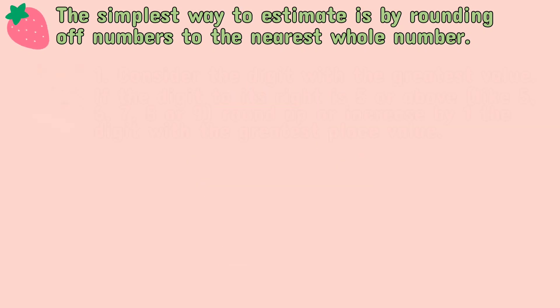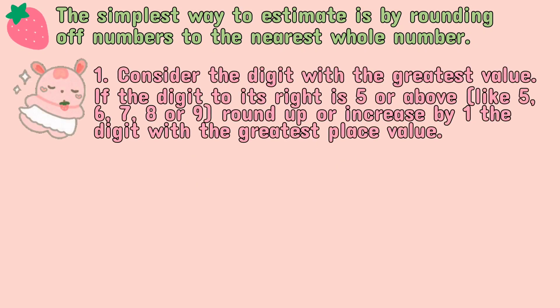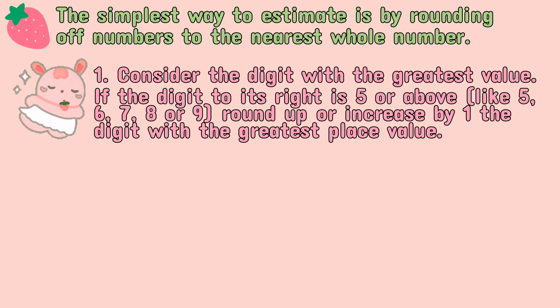First, consider the digit with the greatest value. If the digit to its right is 5 or above — like 5, 6, 7, 8, or 9 — round up, or increase by 1, the digit with the greatest place value.